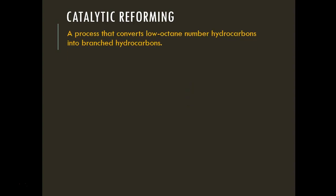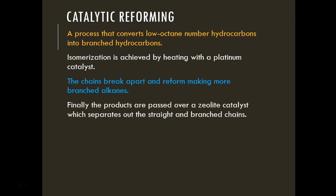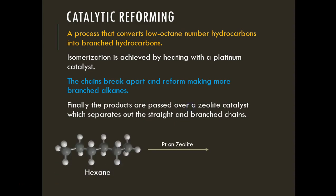Catalytic reforming converts low-octane-number hydrocarbons into branched hydrocarbons, increasing their octane number. This isomerization is achieved by heating with a platinum catalyst, causing chains to break apart and reform into more branched alkanes. The products are then passed over a zeolite to separate straight- and branched-chain components. For example, hexane can be reformed over platinum through a zeolite to form 2,2-dimethylbutane, which has a higher octane rating due to increased branching and a shorter main chain length.